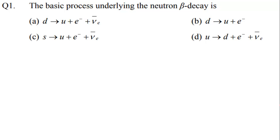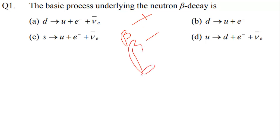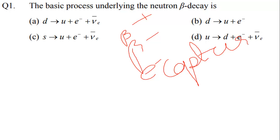Our first question is: which is the basic process underlying the neutron beta decay? First of all, in neutron beta decay I will give you three types — beta plus decay, beta minus decay, and electron capture. We will put all three into the beta decay framework.